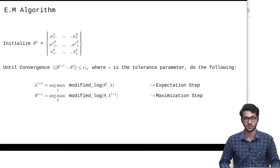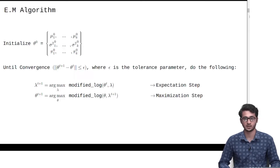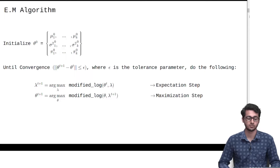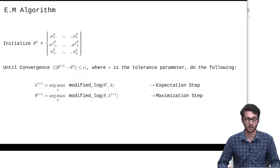The value of pi indicates the probability that a given point comes from the kth distribution. Once we have initialized our parameters, we are going to go to the expectation and the maximization step. In the expectation step, we are going to find the values of lambda, which are the artificial parameters introduced for our modified maximum likelihood problem.